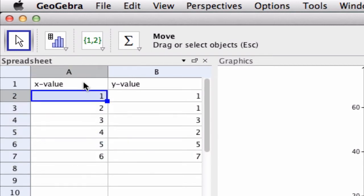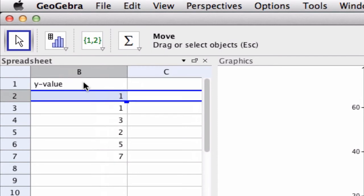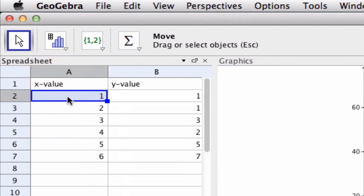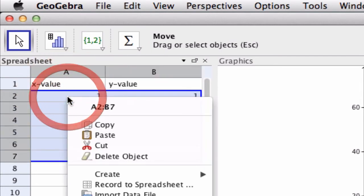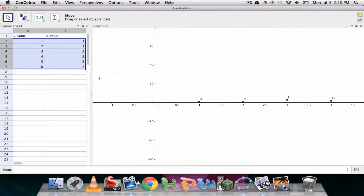Now if we highlight this section right here and then right-click, we can just go to Create and then Create a List of Points to see what these points look like. In our graphics view we can move over.